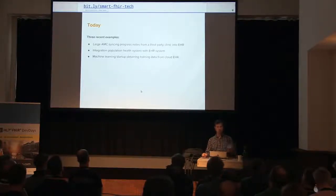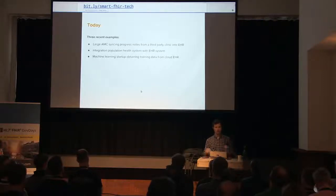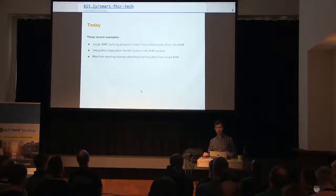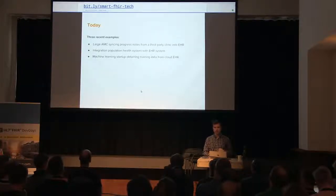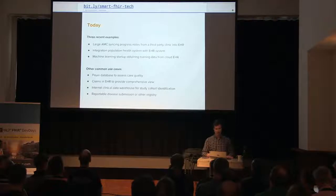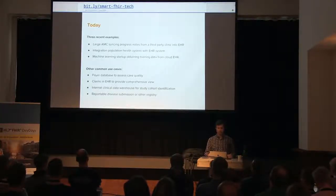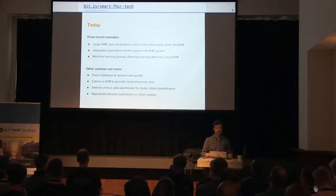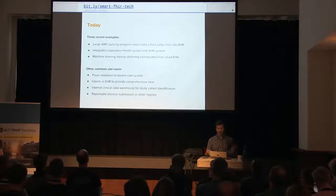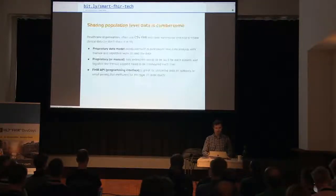The SMART API has been focused on one patient at a time. FHIR has ways to query data across patients — you can search a FHIR server for all observations across patients — but with a very large number, it doesn't perform very well. Common real-world patterns include interactions between payers and providers, bringing claims data into the EHR, integrating clinical data warehouses, and submitting reportable diseases to a registry.